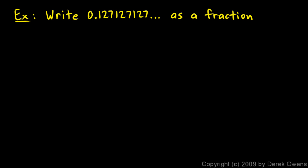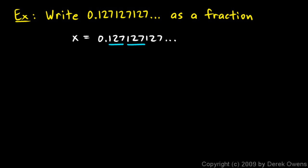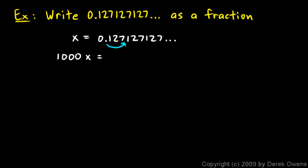Here's our next example: write 0.127127127 and so on as a fraction. We say x equals 0.127127127. Notice that the repeating pattern is a block of 3 digits, so we need to multiply x by 1000. On the left I have 1000x, and multiplying the right side by 1000 means moving the decimal to the right three places, giving 127.127127 with those 127s continuing to repeat.